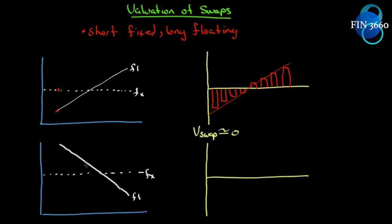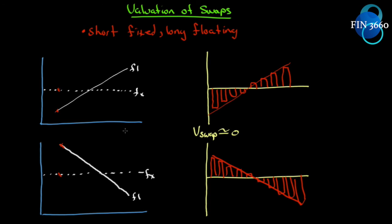If the yield curve is downward sloping and we're short fixed, we pay the fixed rate but receive the floating, which is higher at the start — so our first payment would actually be positive, the mirror image of the upward sloping case. Whether we add up all the gains and losses, it's as close to zero as possible. So depending on the shape of the yield curve, your first payment when you enter the swap may be negative or positive, and that will be known with certainty.